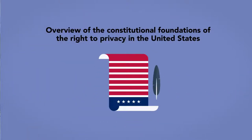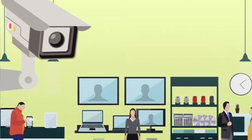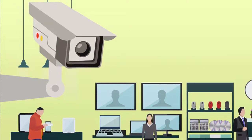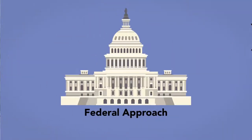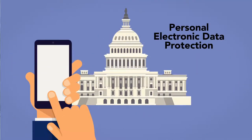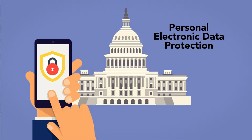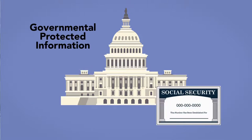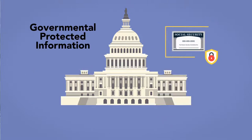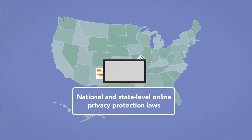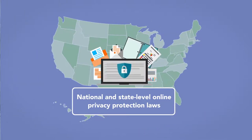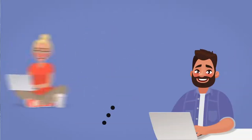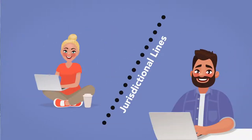This module begins with an overview of the constitutional foundations of the right to privacy in the United States, particularly as they have been applied in the age of electronic surveillance. The discussion then turns to the federal approach to online privacy and personal electronic data protection, including what the government does to protect private information it collects and stores electronically. The module closes with a discussion of national and state-level online privacy protection laws, which often function to protect consumers even across jurisdictional lines.